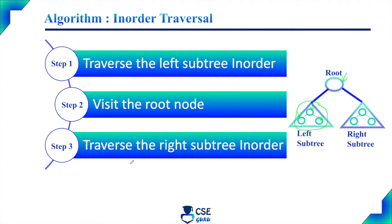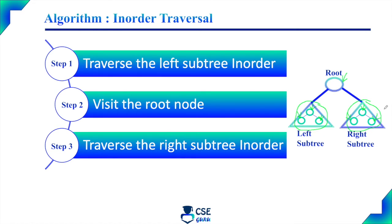Step 3 — traverse the right subtree in order. After visiting the left subtree and the root node, it will move to the right subtree and visit all the nodes in the right subtree as per inorder traversal: first left child, then root node, then right child.